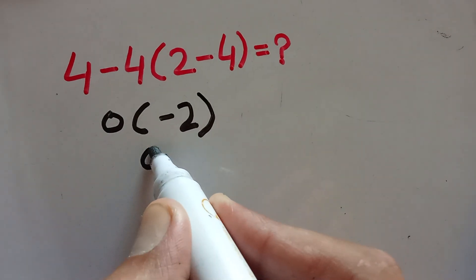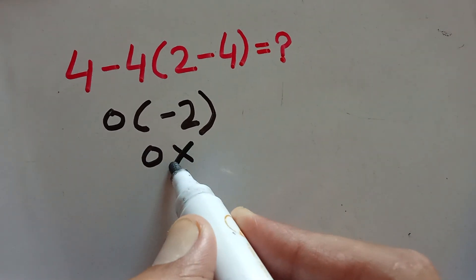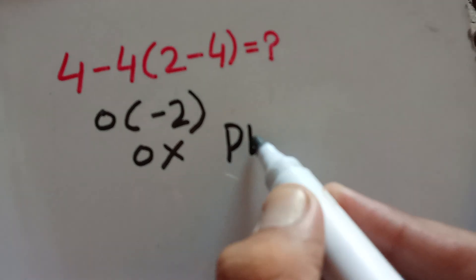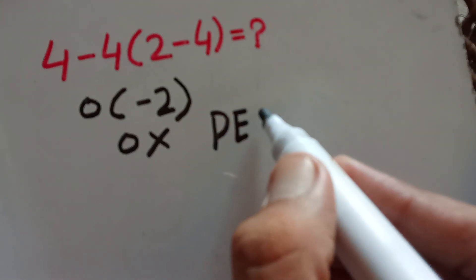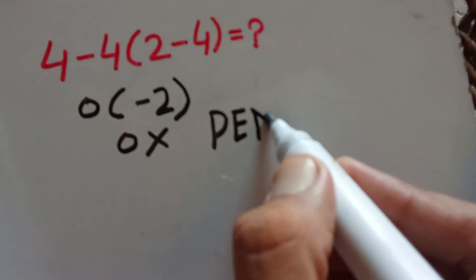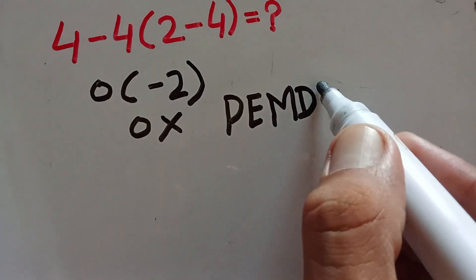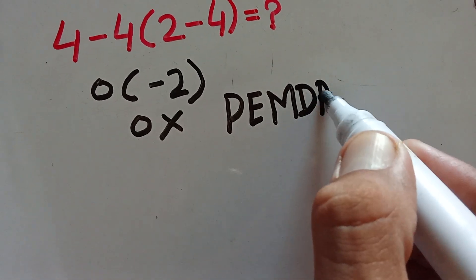This answer is wrong because of the order of operations, which is PEMDAS. P stands for parenthesis, E stands for exponential, M stands for multiplication, D for division, A for addition, and S for subtraction.